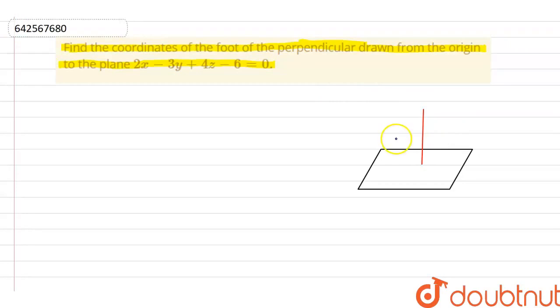Now here this point is origin, that is O, and the coordinates of origin is 0, 0, 0, and this point is named as P.